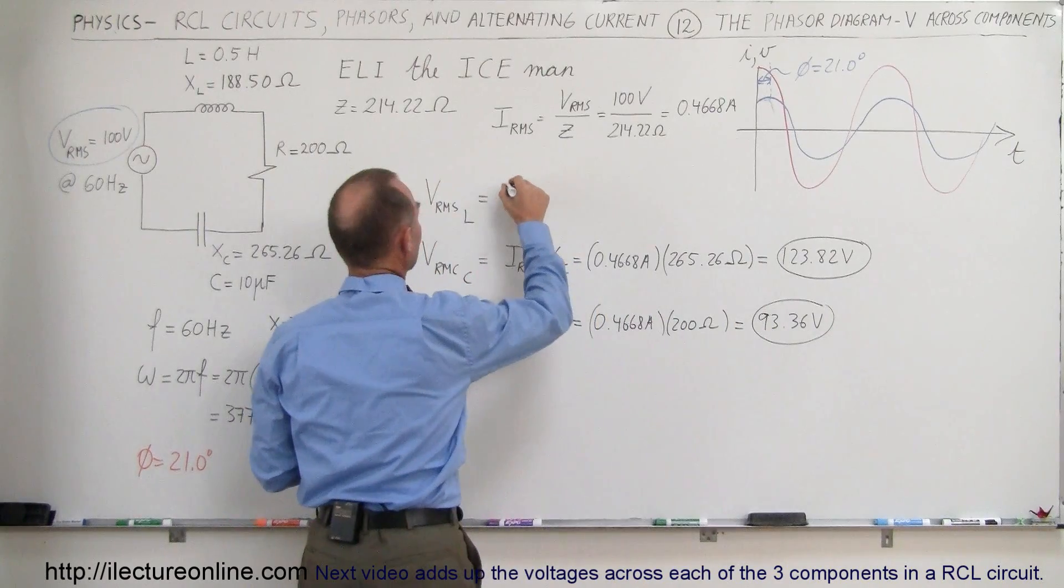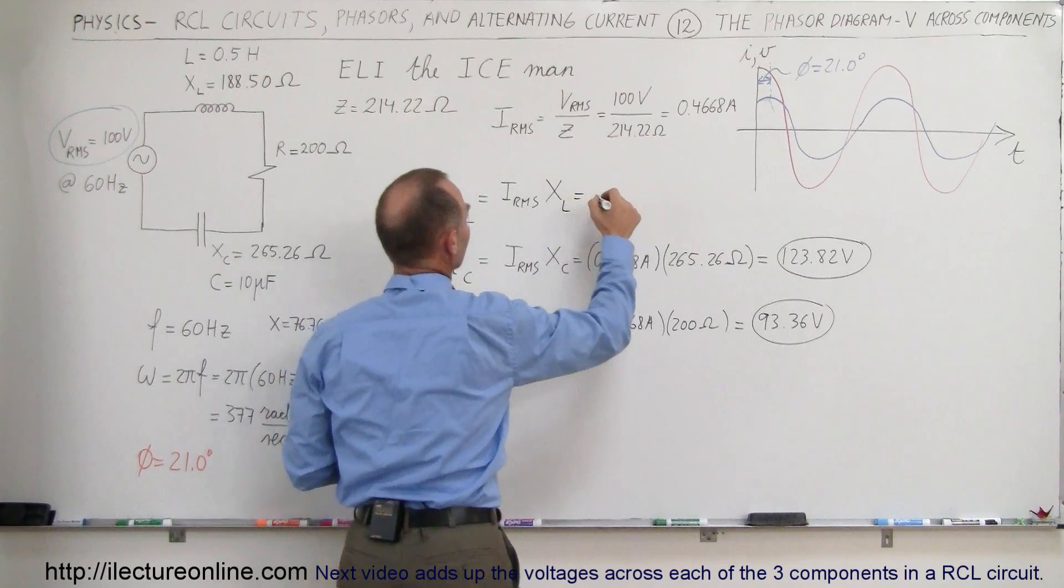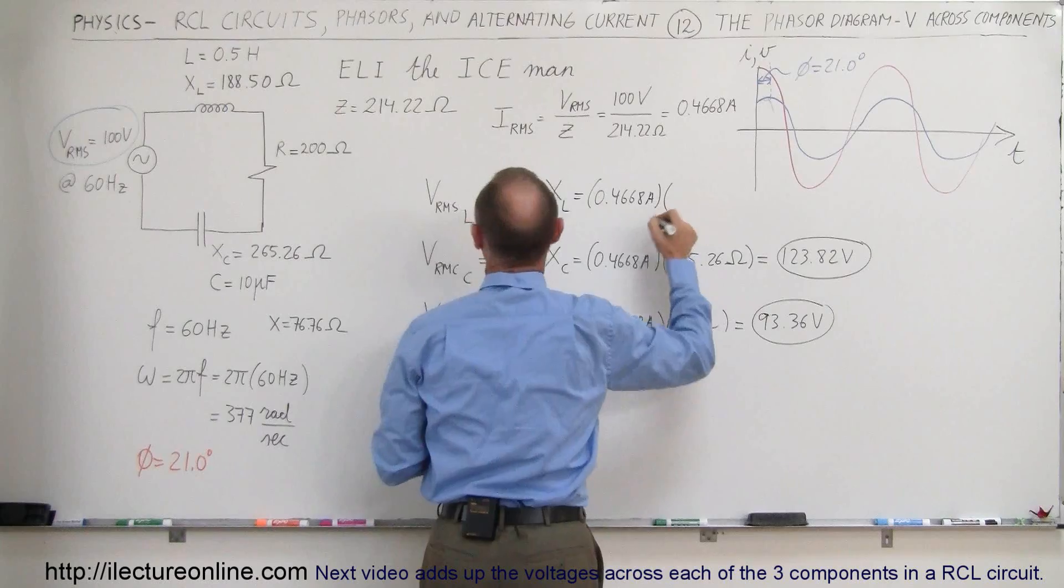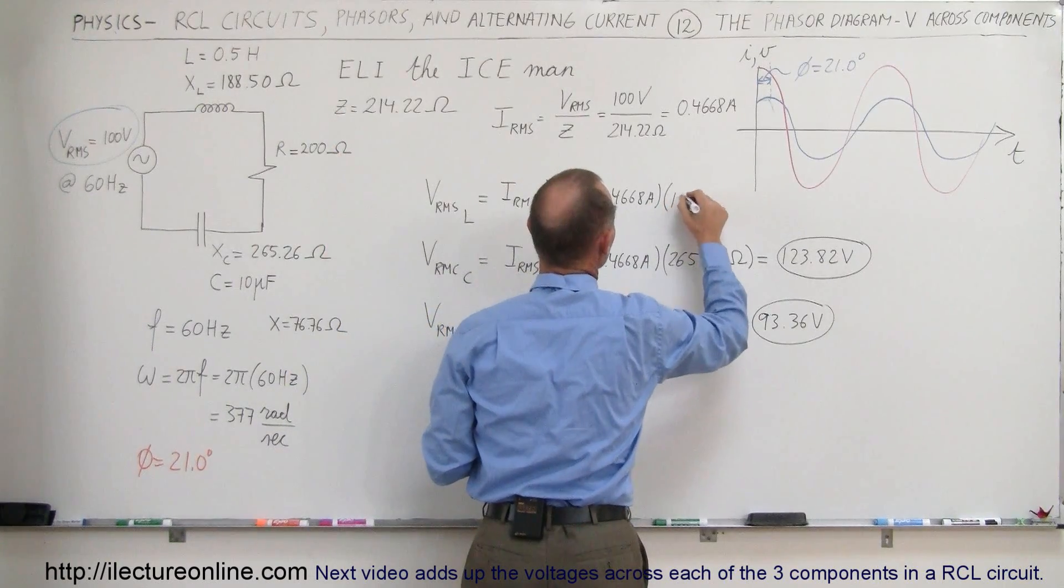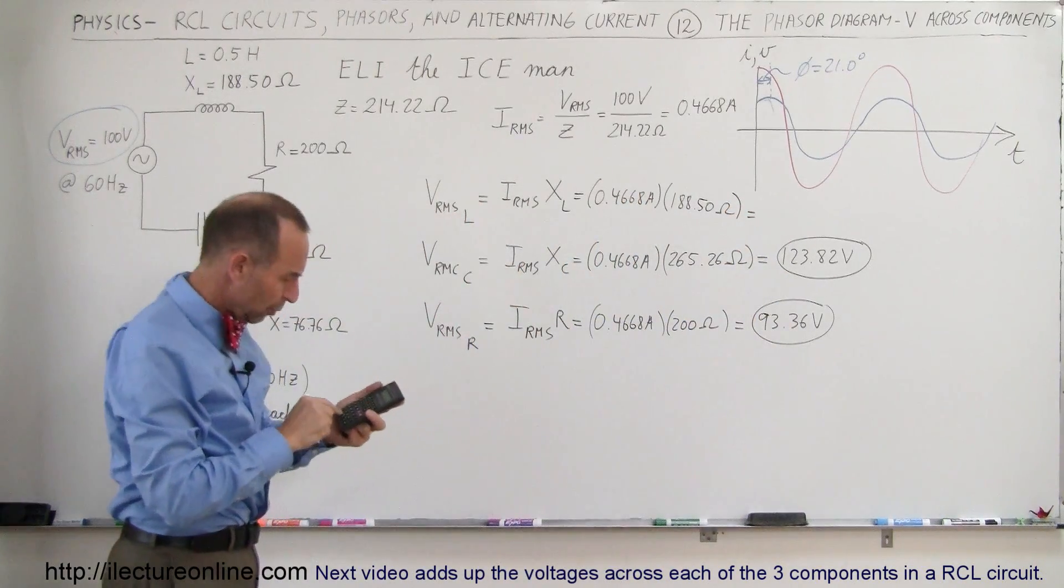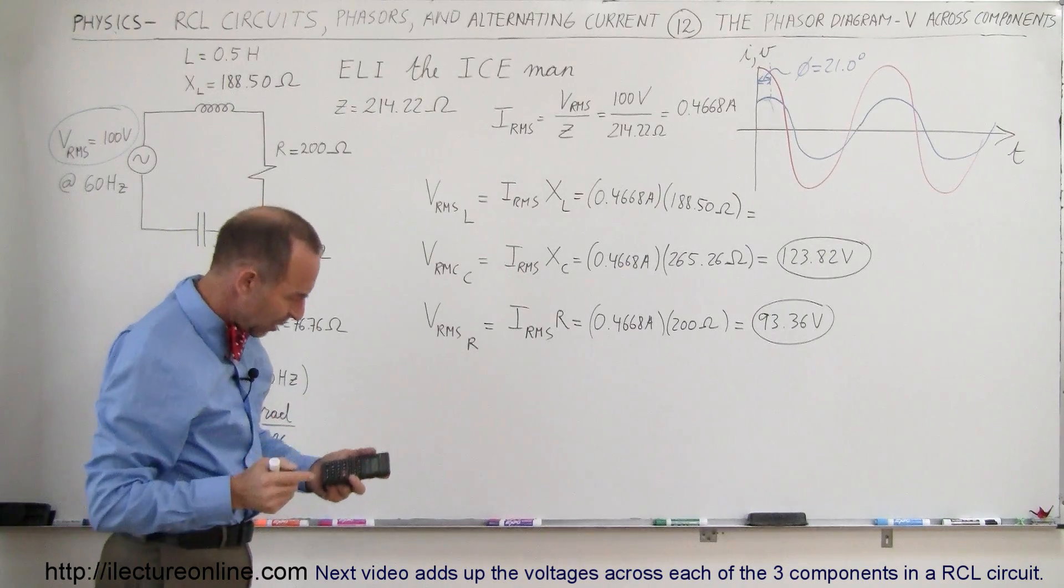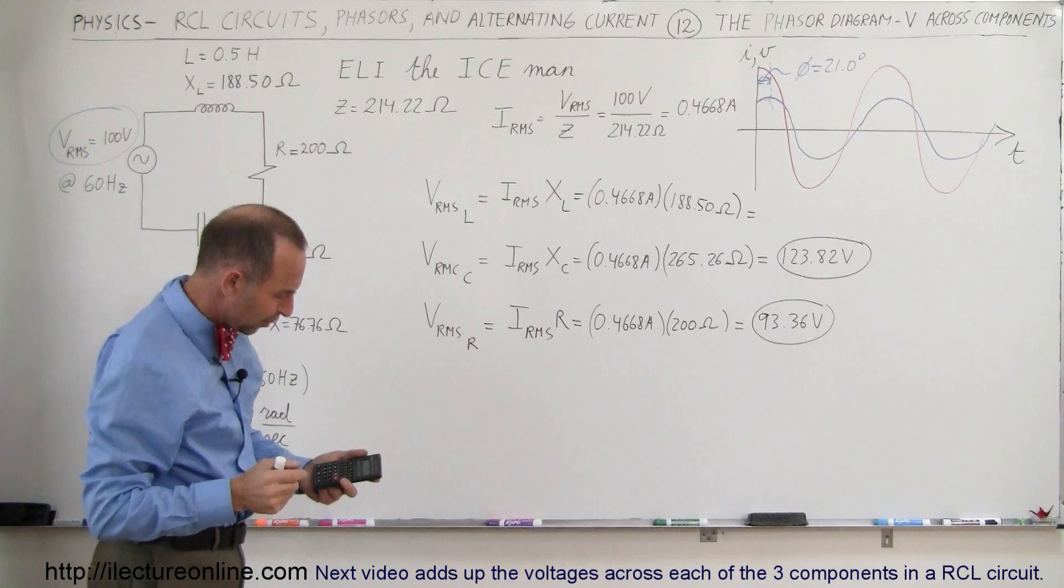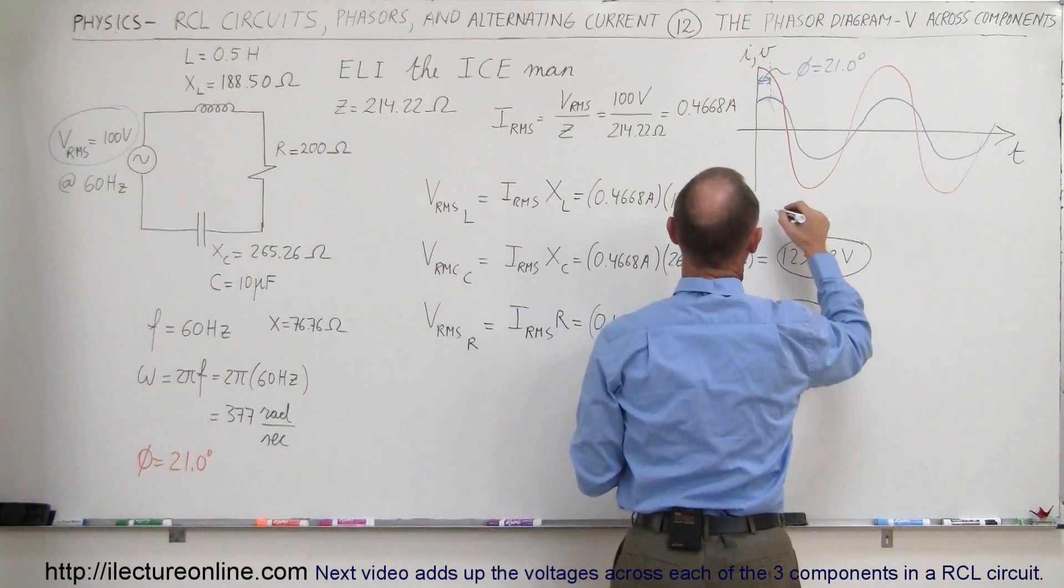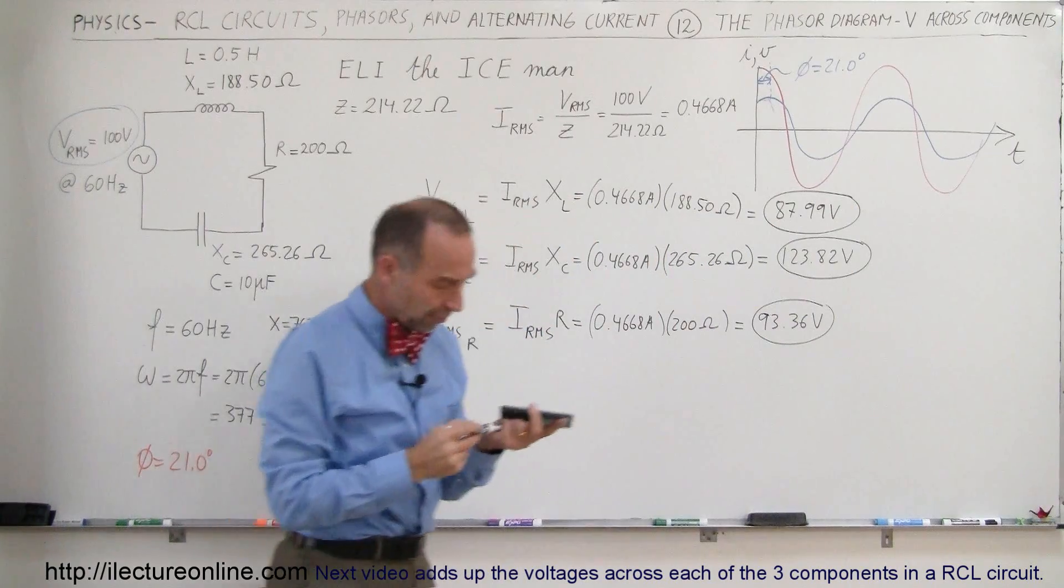And then finally, for the inductor, we take the RMS current and multiply times the reactance of the inductor. So here we have 0.4668 amps times 188.50 ohms. So 0.4668 times 188.50, and we get almost exactly 87.99 volts. Those are the three voltages.